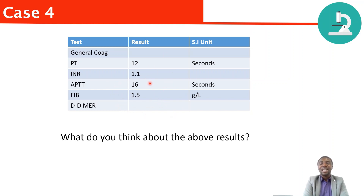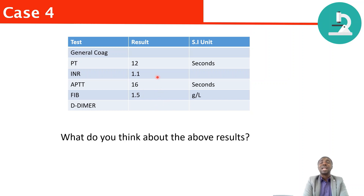What I want you to understand is that once you see this kind of result, you check it for a clot. I would expect this sample to be clotted. Once you've seen the clot, you reject the sample and ask for a repeat. So that's what happened on this occasion.